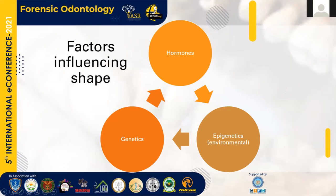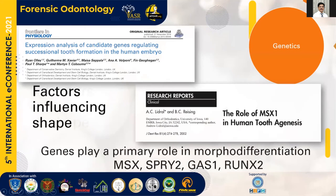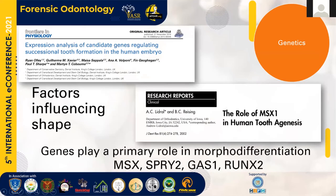The premolar is a very unique tooth — the mesial marginal developmental groove and mesial developmental depression give it a characteristic asymmetry. Bailey and Lynch analyzed this and were able to correctly classify Neanderthal and modern humans in 98.1 percent of cases. This shape is influenced by hormones, genetics, and epigenetic factors. Genetics plays the primary role, as genes like MSX, RUNX2, GAS1, and SPRITE2 have been researched as important components in morpho-differentiation of a tooth in the advanced bell stage.